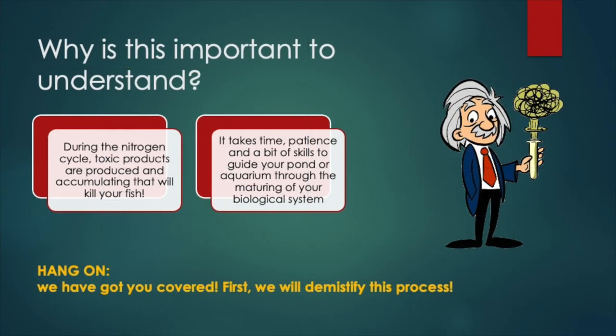But why is it important? To answer this question, we need to understand two fundamental aspects about this cycle. First, this nitrogen cycle toxicates the environment of your fish. Of course, nature has implemented a safe fail for this, but this takes some time to speed up. It has to do with all kinds of microbiological processes and organisms that will clean up the mess this nitrogen cycle creates. The drawback is that we need to take responsibility and guide this nitrogen cycle a bit, to make sure our fish are happy and alive, and toxic levels stay below acceptable thresholds.